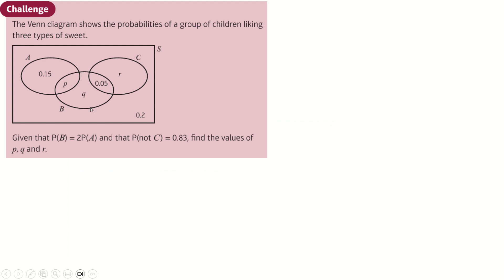Probability of b is two lots of the probability of a. So, therefore, p plus q plus 0.05, which is the probability of b, is equal to two lots of 0.15 plus p. You can rearrange this. First, I guess, probability of not c, which is this plus this plus this plus this, is equal to 0.83. You can rearrange both these, and I can solve a simultaneous equation. I'll get these two answers.